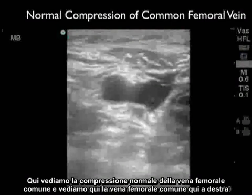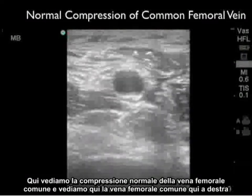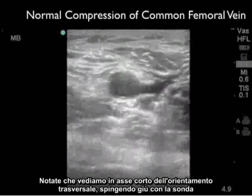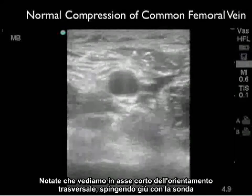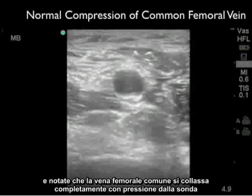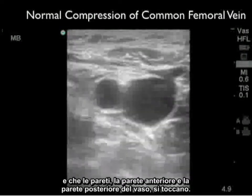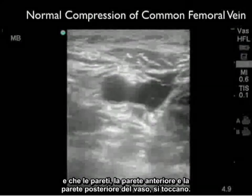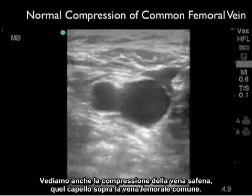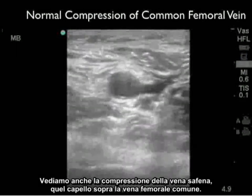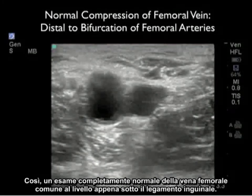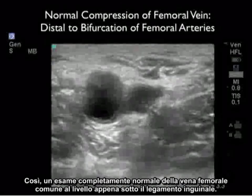Here we see normal compression of the common femoral vein, seen to the right of the common femoral artery which we see to the left. Looking in the short axis or transverse orientation and pressing down with the probe, the common femoral vein completely collapses and the anterior wall and posterior wall of the vessel meet. We also see compression of the saphenous vein — that little cap on the top of the common femoral vein — a completely normal exam at the level just below the inguinal ligament.